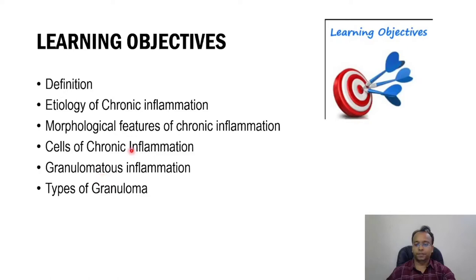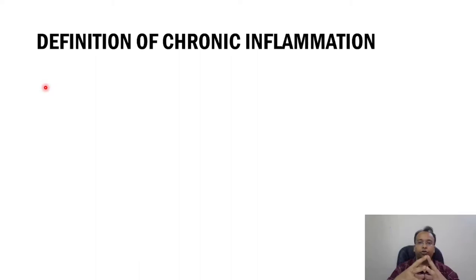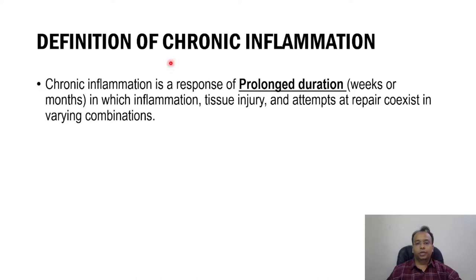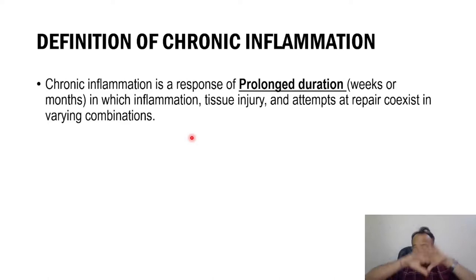First, we begin with the definition of chronic inflammation. In our acute inflammation discussion, we saw that acute inflammation is of short duration, while chronic inflammation is of prolonged duration — the response could last for weeks or months — in which inflammation, tissue injury, and attempts at repair coexist in varying combinations. In chronic inflammation, there is presence of mononuclear inflammatory cell infiltration.